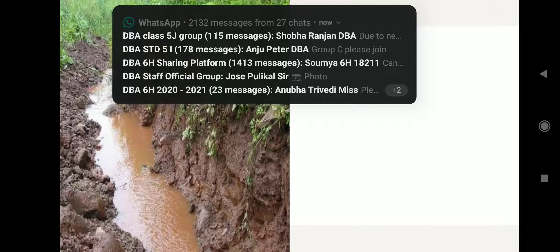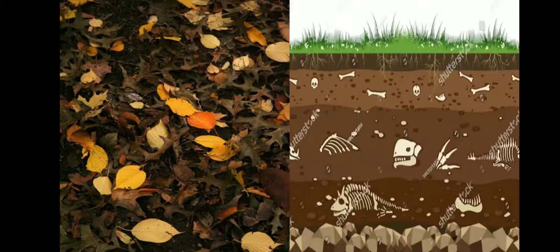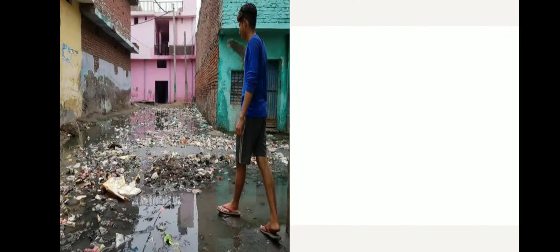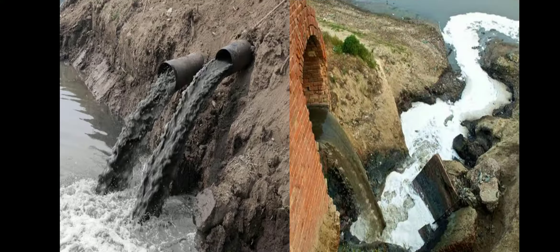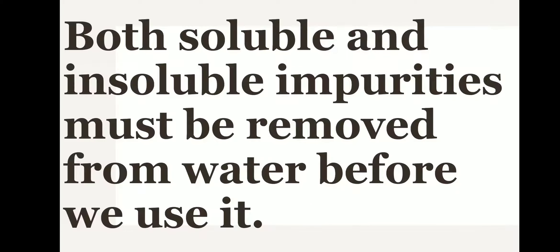Some common impurities found in water are soil — you can see here soil mixed with water. Some others are dead remains of plants and animals, waste from houses, and waste from industries. These impurities contaminate the water. Some of them are soluble while some others are insoluble.